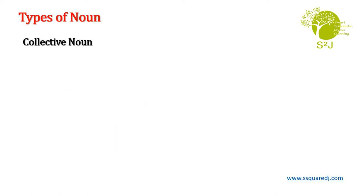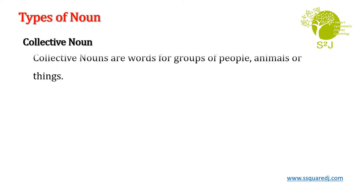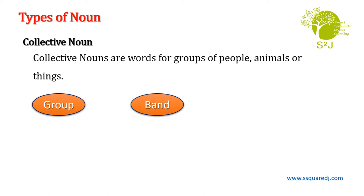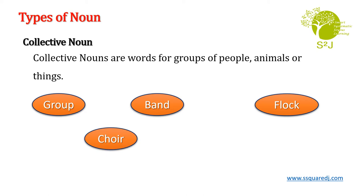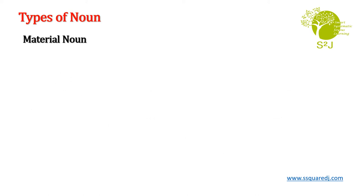Let us now see some examples about collective noun. What is a collective noun? Collective nouns are words for a group of people, animals or things. For example: group, band, flock, batch. All these are collective nouns. They represent a group of people, things, animals or birds.